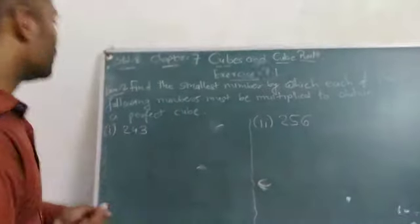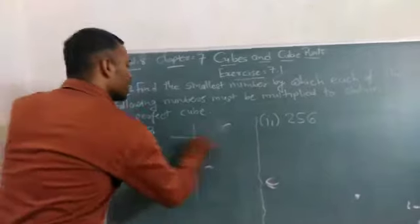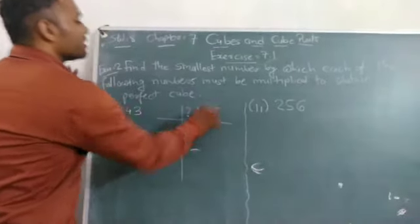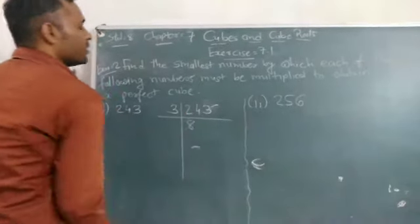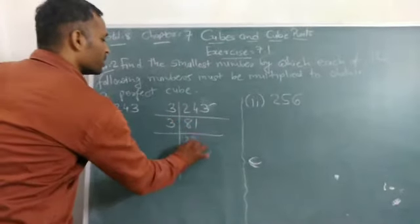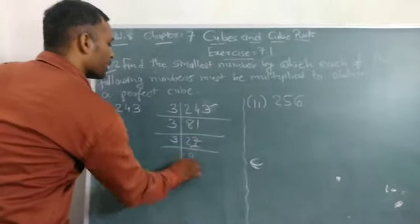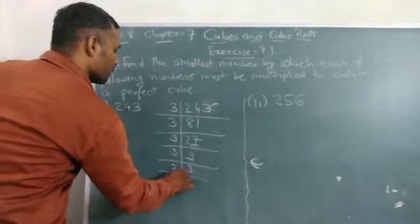Start with first, 243. Here we are using prime factorization method. Last digit is 3, so start with 3. 3 times 81 is 243, 3 times 27, 3 times 9, 3 times 3, and 3 times 1.